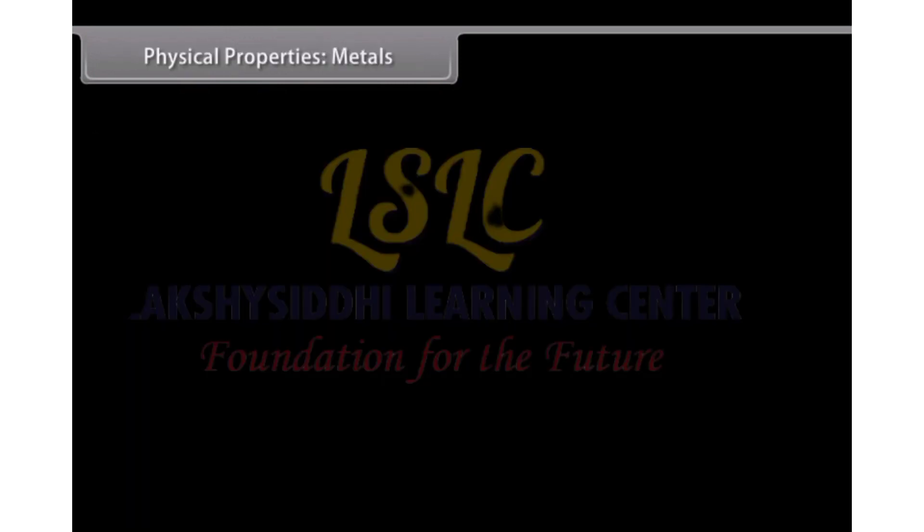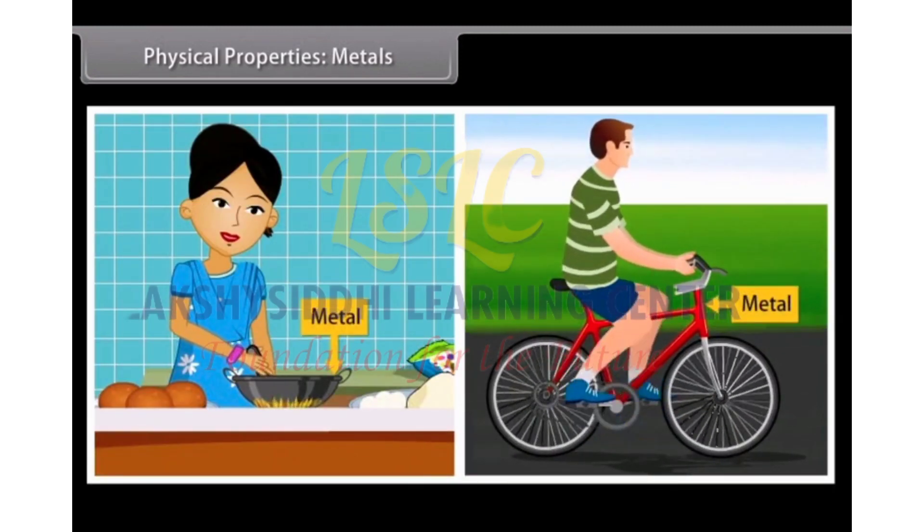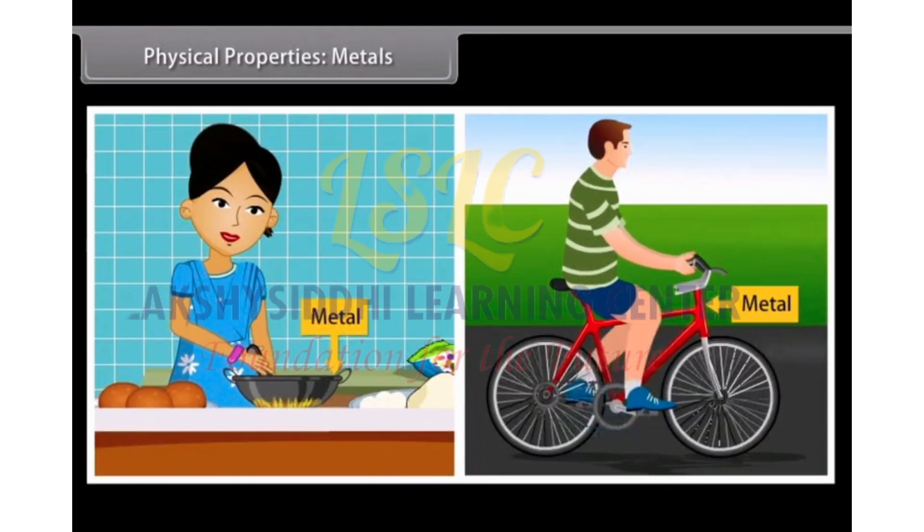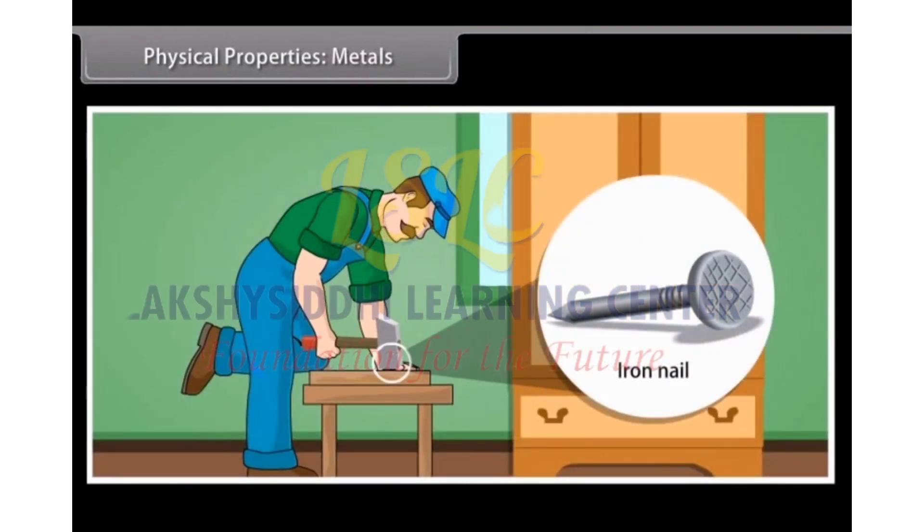Physical properties: Metals. You come across a lot of metals and non-metals in your day-to-day life. For example, the hammer that you use to fix nails is a metal. The nail made of iron is also a metal. Let us look at the physical properties of metals.